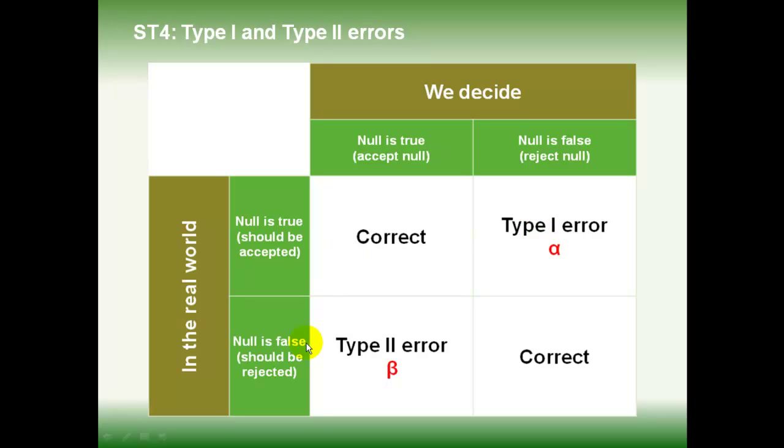On the other hand, if the null is false in the real world and we should really reject it, then if we do that and we decide the null is false, again, we've made a correct decision. If the null is false but we decide that it is true, then we've made what statisticians call a type 2 error. And the alpha and beta here just refer to the rates at which those errors occur. In the material readings and the statistical manual, we look a little bit more at what those things actually mean. There's also an exercise using Excel to explore type 1 and type 2 errors.